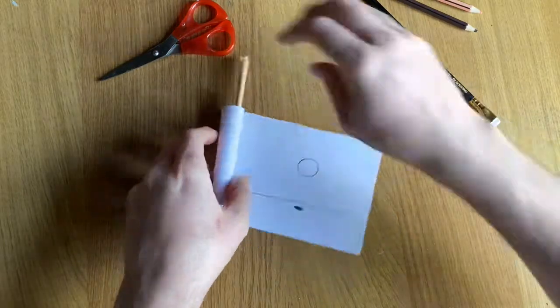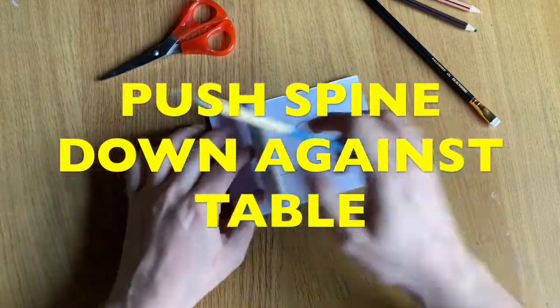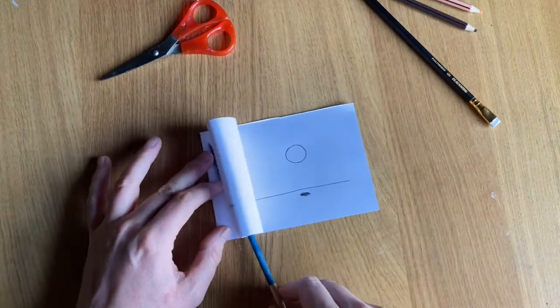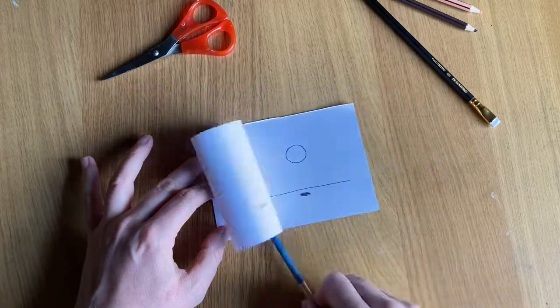After I've rolled that tight, I'm just gonna use the same stick here to animate my page. I'm gonna hold this really still here at the spine and just flick back and forth, being careful not to go too close to the edge of the paper.